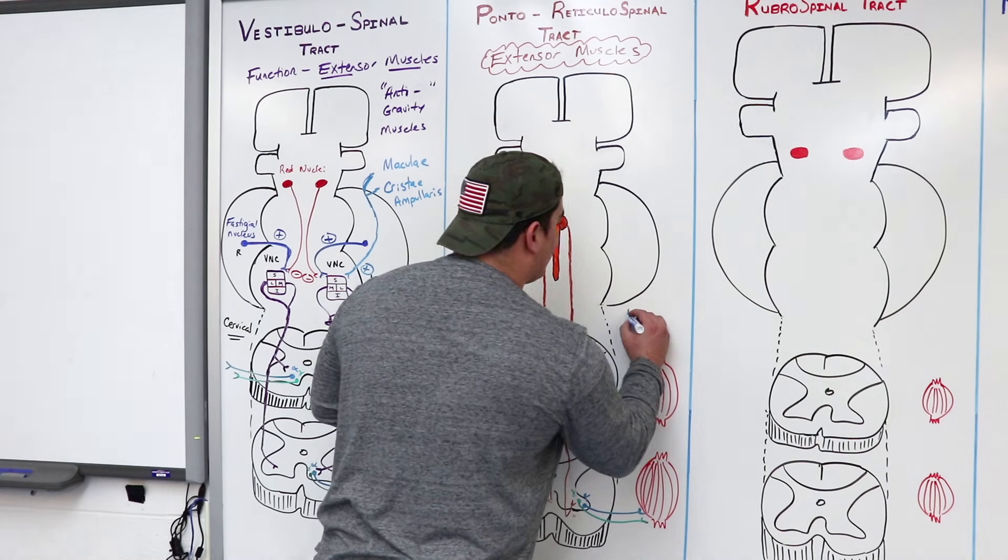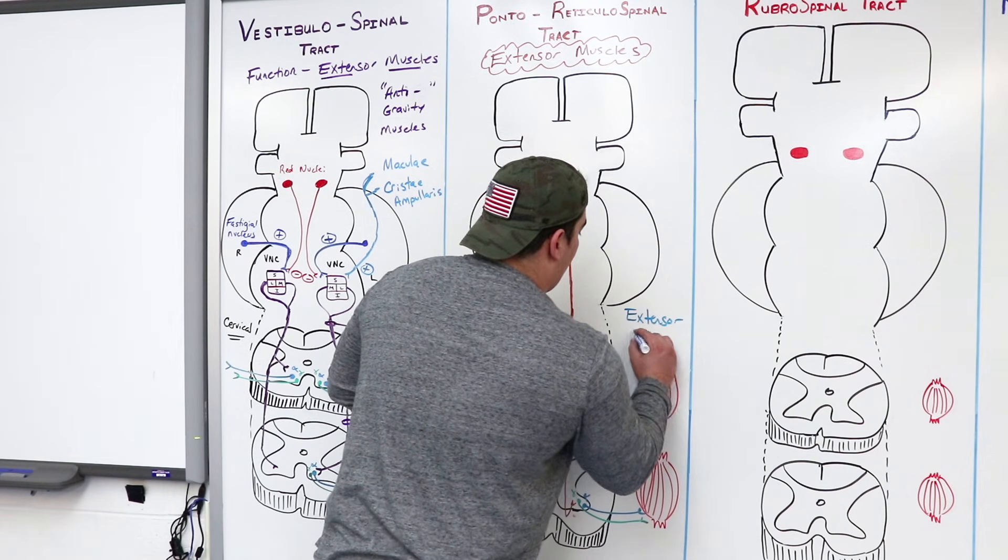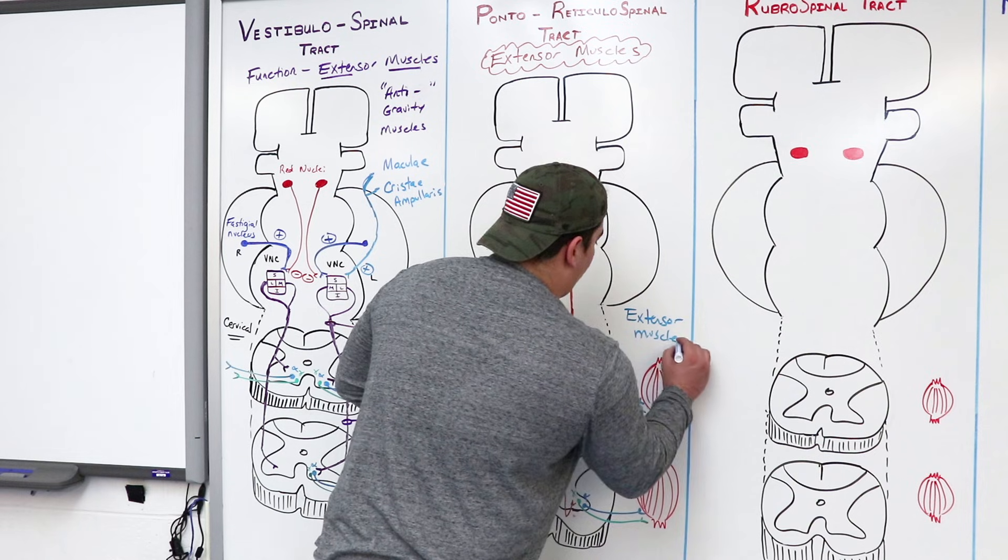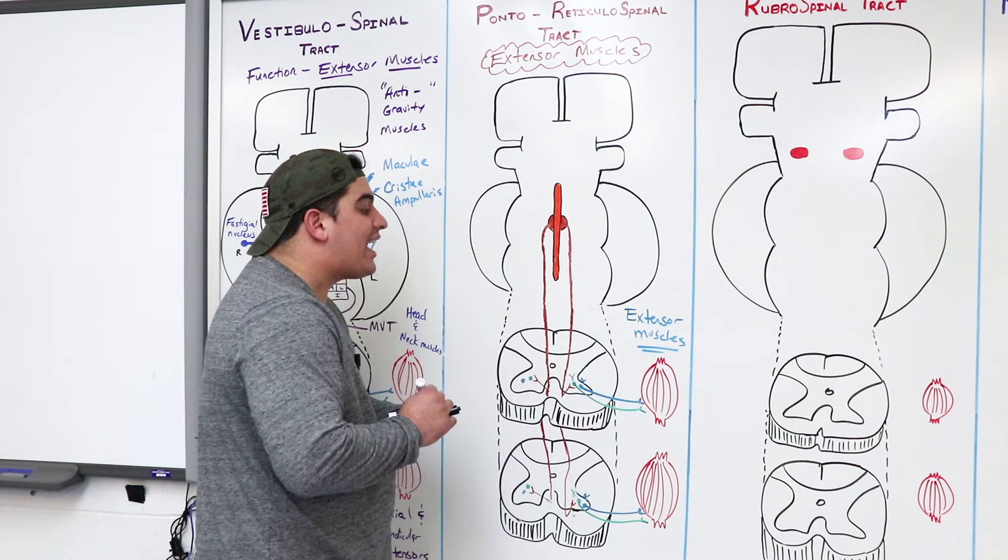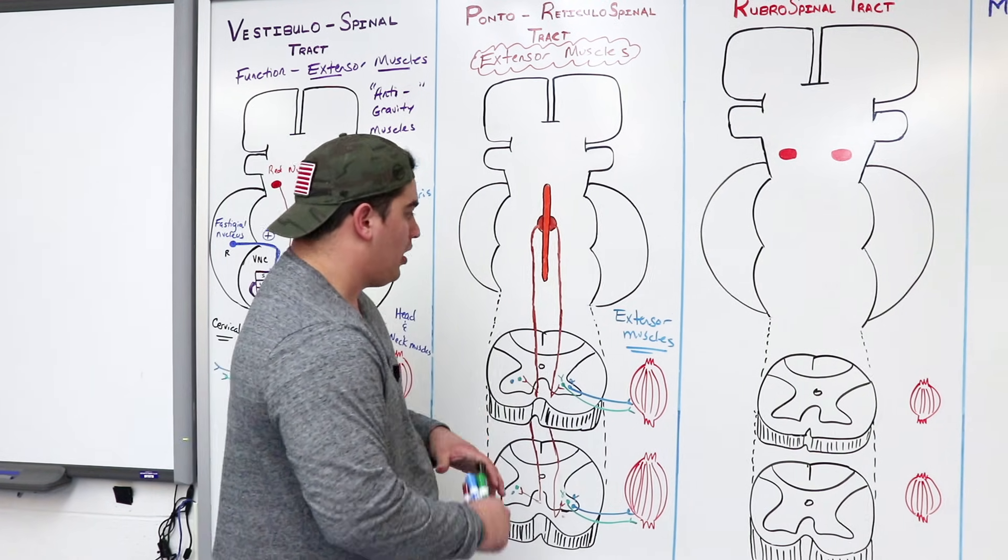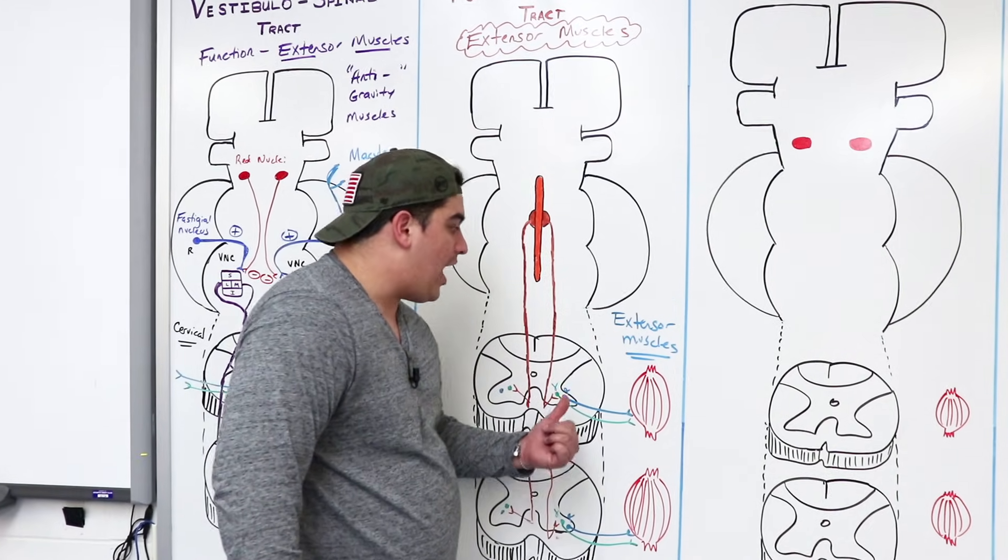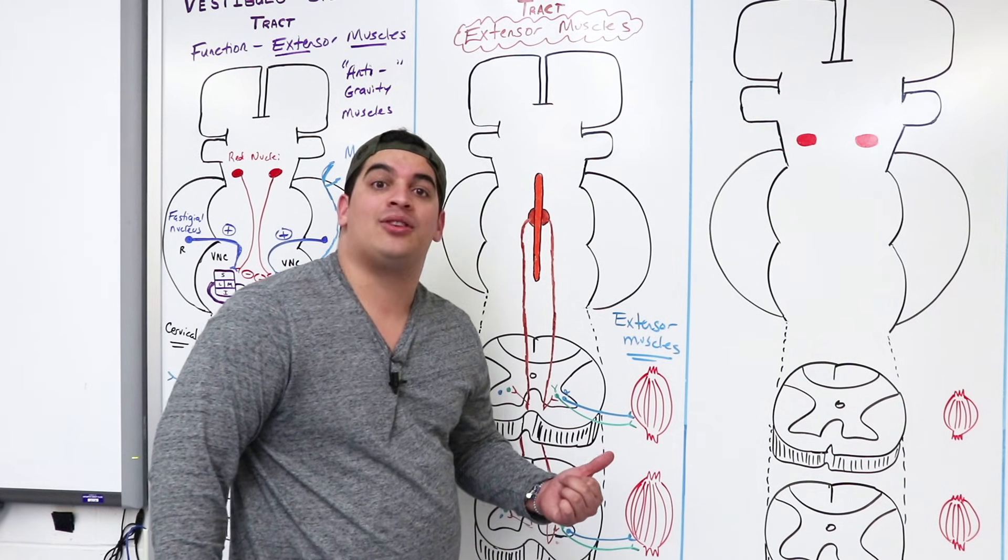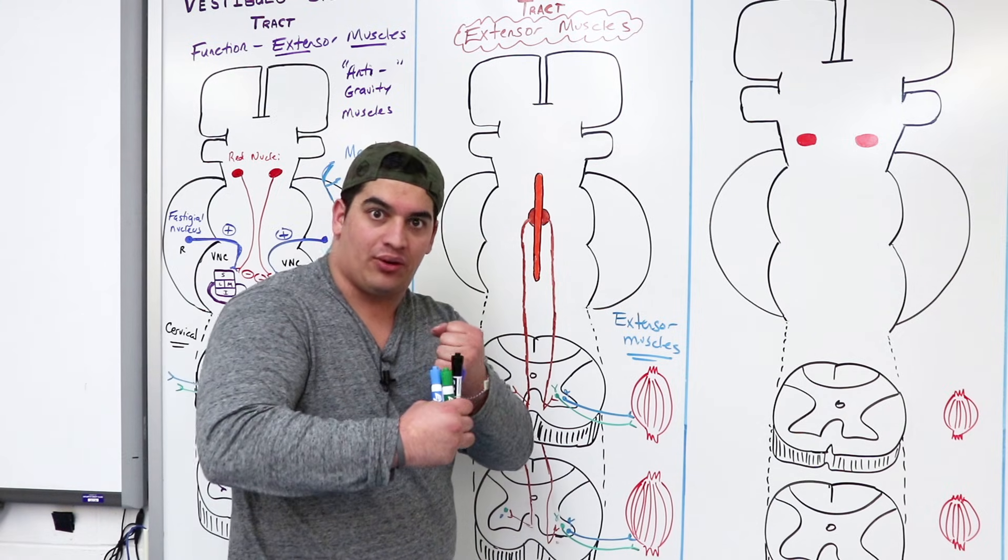Then from that, these guys can go out to different types of extensor muscles. And so when it supplies these extensor muscles, remember, what is the alpha motor neuron doing? It's causing the contraction of the extrafusal muscle fibers, and the gamma is causing the contraction of the intrafusal muscle fibers to keep those muscle spindles taut.